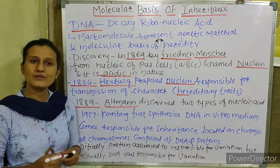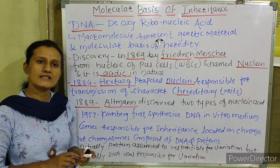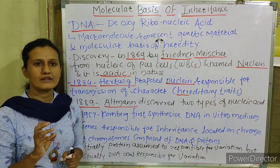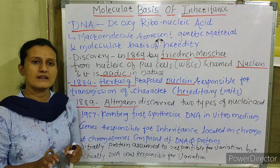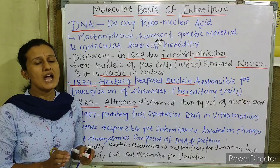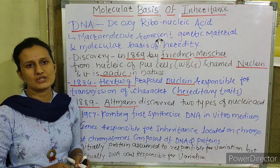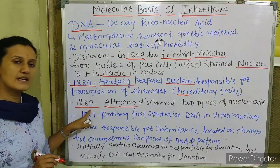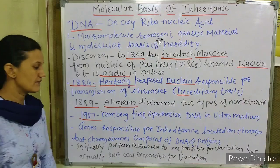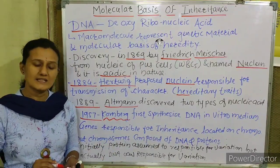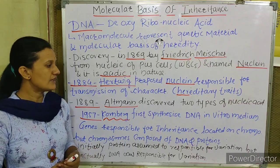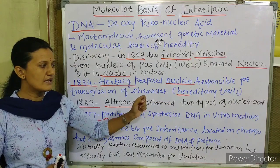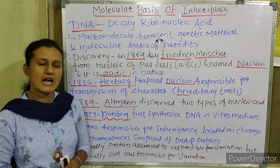In 1889, Altmann discovered two types of nucleic acid: deoxyribonucleic acid and ribonucleic acid. Both nucleic acids contain ribose sugar and nitrogen bases, but DNA has a deficient amount of oxygen and RNA has a specific amount of oxygen. In 1957, Kornberg first synthesized synthetic DNA in a laboratory — DNA synthesized by Kornberg in an in vitro medium.